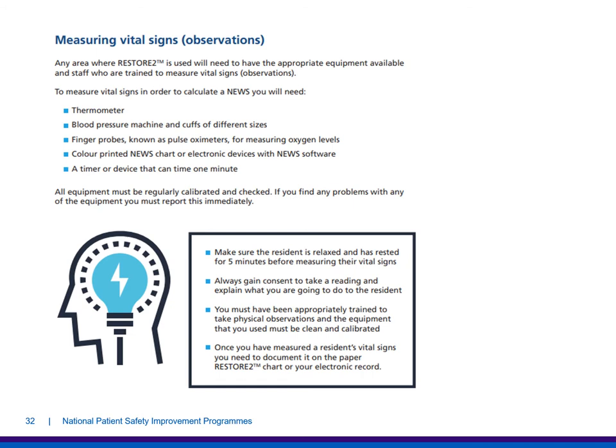Any area where Restore2 is used will need to have the appropriate equipment available and staff trained to measure vital signs. You will need a thermometer, a blood pressure machine with cuffs of different sizes, finger probes or pulse oximeters, colour printed NEWS charts or electronic devices with NEWS software, and a timer that can time one minute. All equipment should be regularly calibrated and checked, and any problems reported immediately.